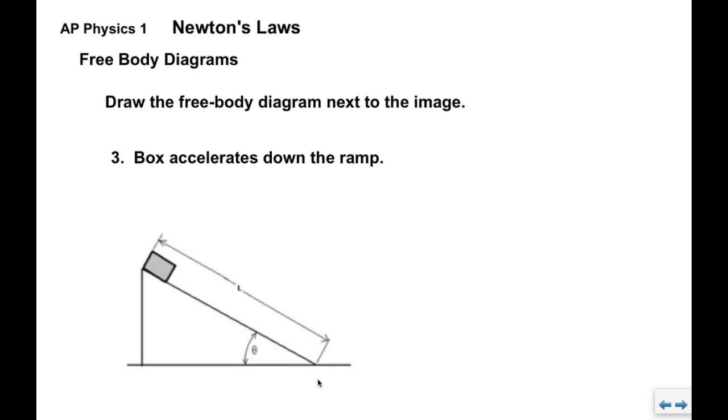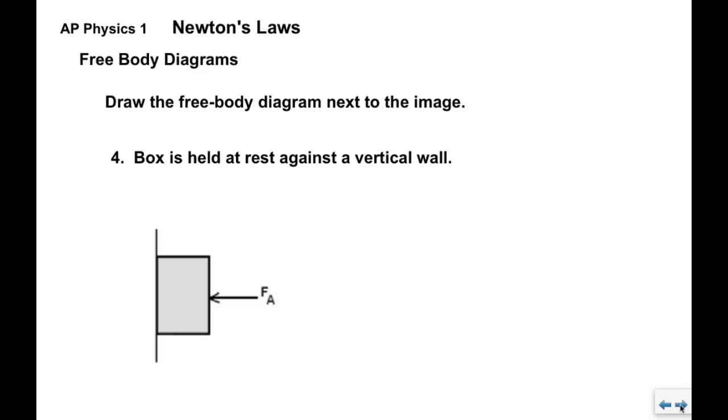We have a ramp, an inclined plane. Keep in mind that F N points perpendicular to the surface and outward. So, it would be this way, right? And then, last we have a box that is held at rest against the vertical wall by an applied force F A. It's held at rest so we can assume that the wall has friction. Okay, it's rough. It's going to hold the box up when we push against it.